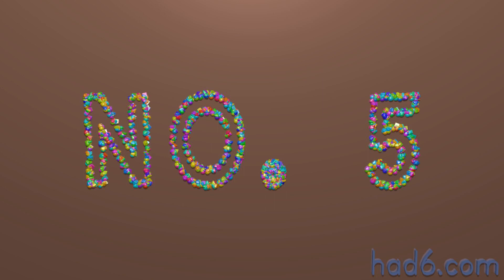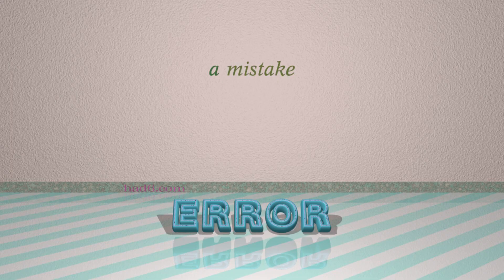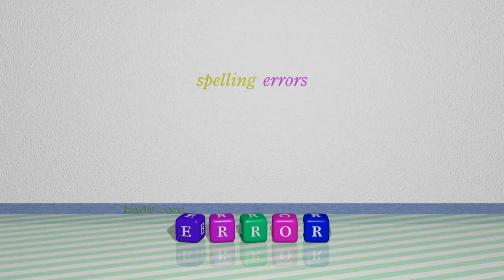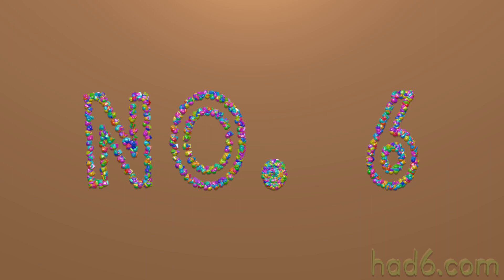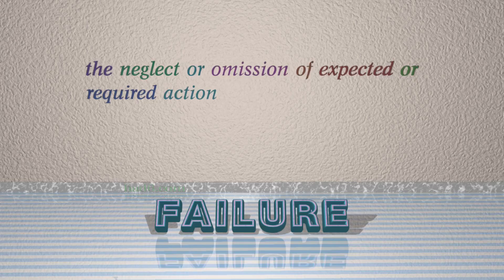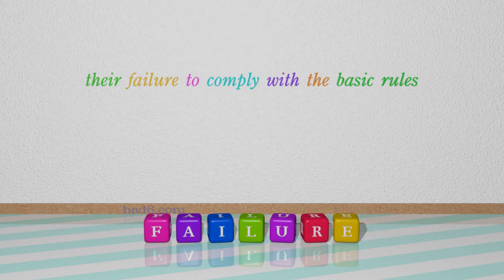Number 5: Error, which means a mistake. For example: spelling errors. Number 6: Failure, which means the neglect or omission of expected or required action. For example: their failure to comply with the basic rules.